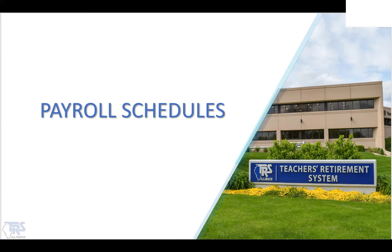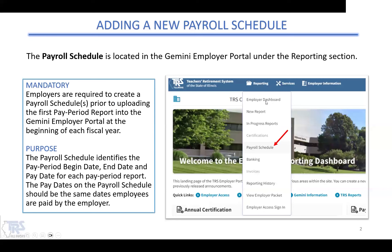This training session is for payroll schedules. The importance of payroll schedules is that it identifies the pay period begin date, end date, and pay date for each one of your pay period reports. The pay dates on your payroll schedule should be the same as the dates that the employees are paid. This must match what is in your payroll software — whatever you are entering on our payroll schedule in Gemini has to match exactly. This is mandatory, so you are required to make one every year prior to uploading your first pay period report.